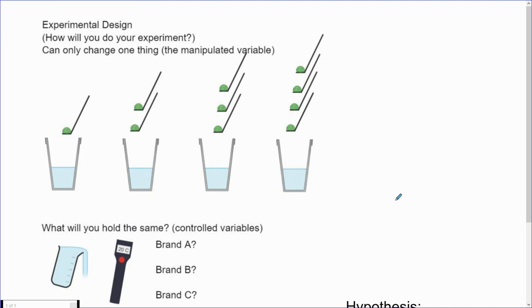There are many things in a science experiment that we can control and change. However, we need to be careful of what we control and change so that our results are scientifically valid. So let's go over some of the experimental design features that we have to consider.